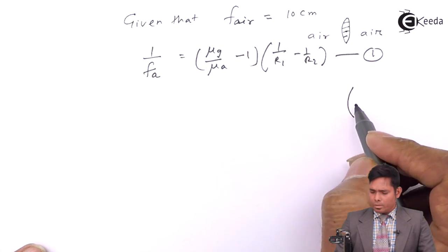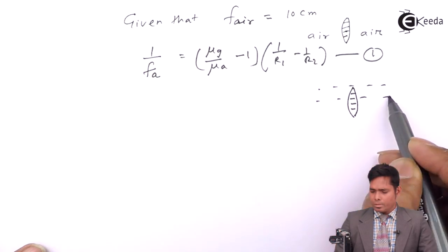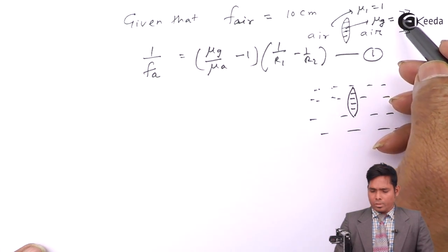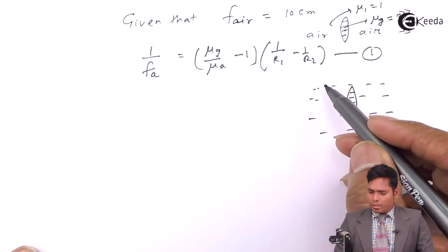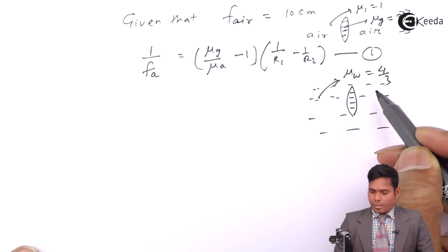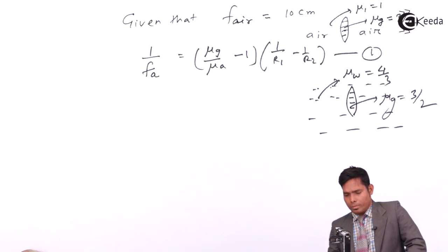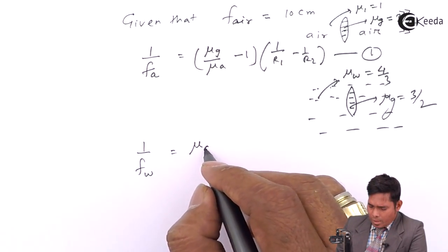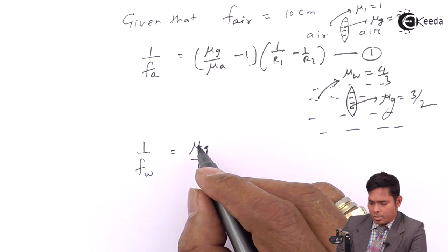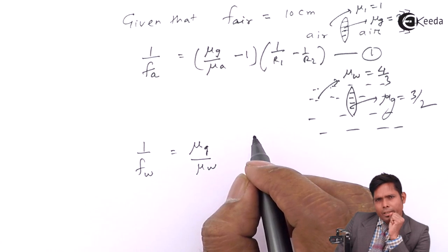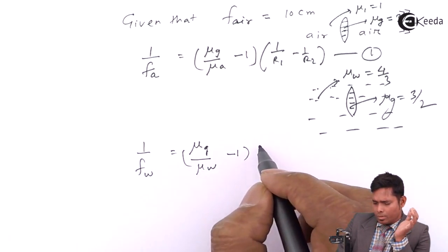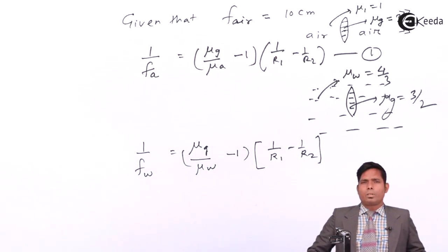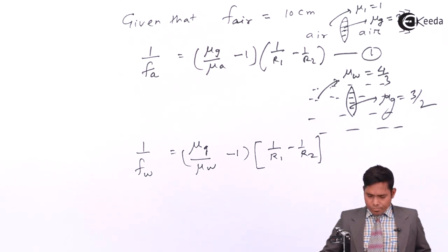In the second case, when the lens is dipped in water, the refractive index of air mu_1 is 1. The refractive index of glass is given as 3 by 2. Here the medium is different, so the refractive index of water is given as 4 by 3. I will write 1 by F_water equals (mu_G / mu_W − 1) × (1/R1 − 1/R2), because this is the refractive index of the lens material with respect to the surrounding medium. By placing the lens in a different medium, what is not going to change is its radius of curvature. This is equation number 2.